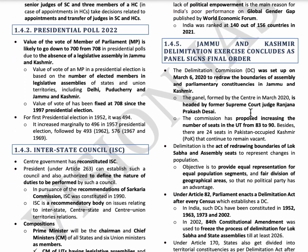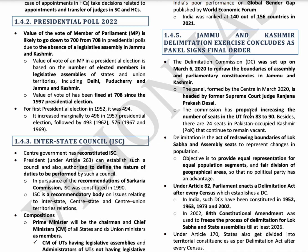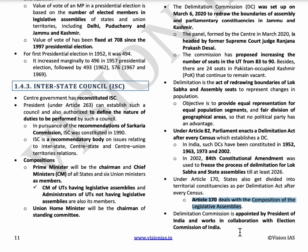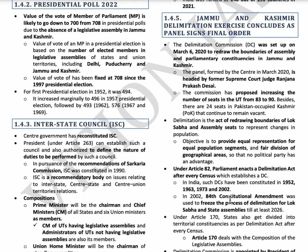The next topic is Jammu and Kashmir Delimitation Exercise. Regarding the delimitation commission, as per Article 170, states will be divided into territorial constituencies as per the delimitation act. The delimitation commission is appointed by the President. Under Article 82, Parliament forms a delimitation commission after every census. A delimitation commission was set up to redraw the boundaries of constituencies for Jammu and Kashmir elections.